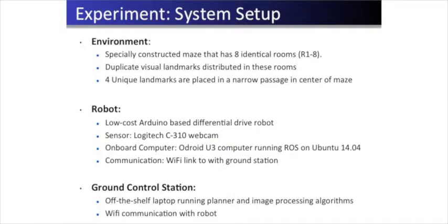Our robot runs in a specially designed maze with 8 identical rooms. In each of these rooms, we placed identical augmented reality markers. In the middle of the maze, there is a passage with unique AR markers which can help the robot localize to a Gaussian belief.